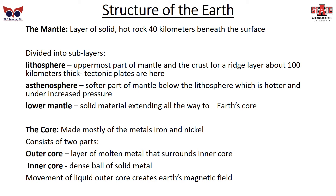The core itself is mostly made of metals — iron and nickel. It has two parts: an outer core, which is a layer of molten metal, and it surrounds an inner core, which is a dense ball of solid metal. Movement of the liquid outer core is what creates the Earth's magnetic field.